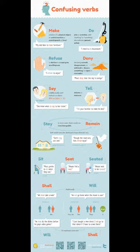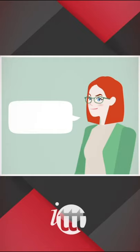Sit: sit is the action of sitting down; it is a verb. For example, most prefer to sit when they eat. Seat: seat refers to an object that we can sit on. For example, please find a seat. Seated: the word seated is a verb in the passive form and is also usually used this way. For example, please wait to be seated.